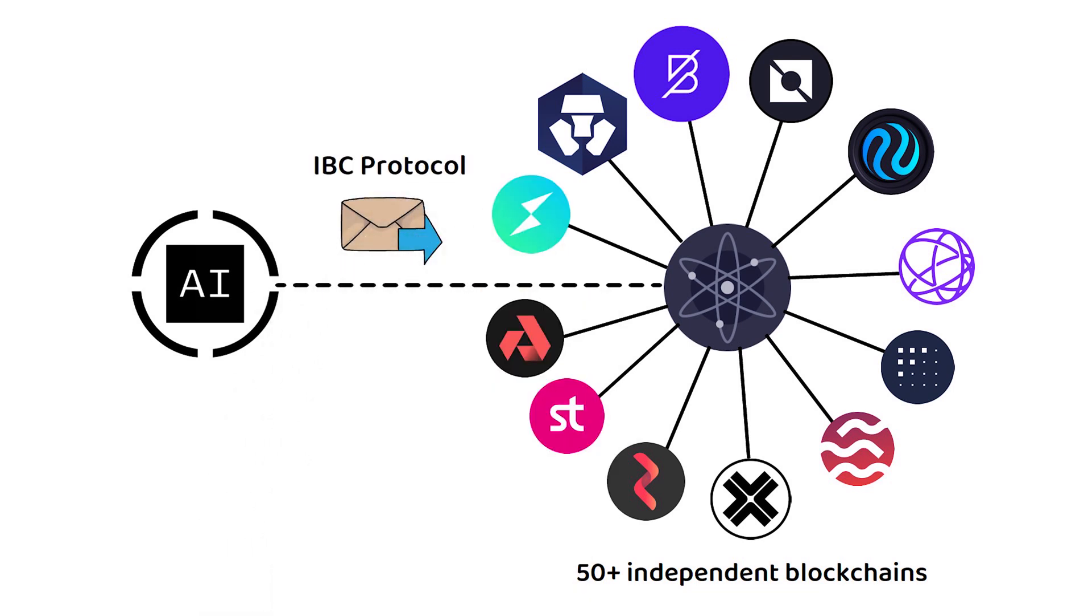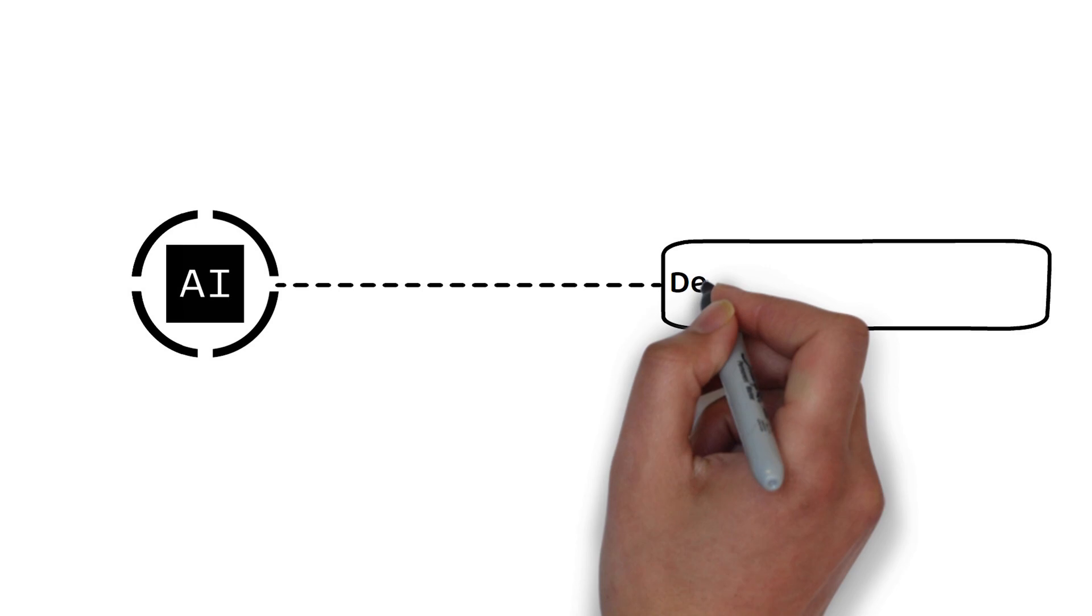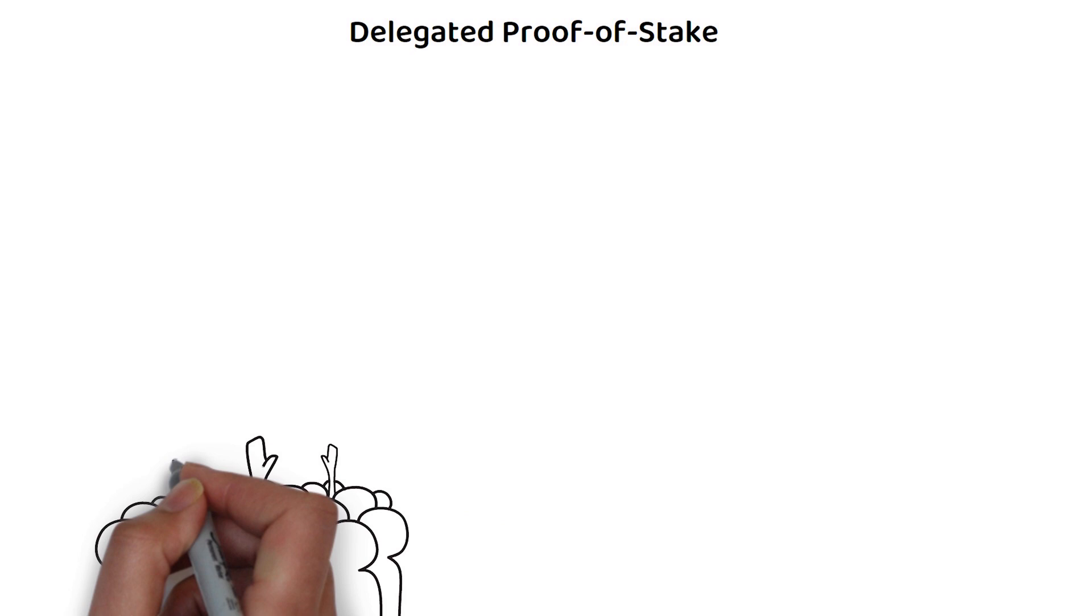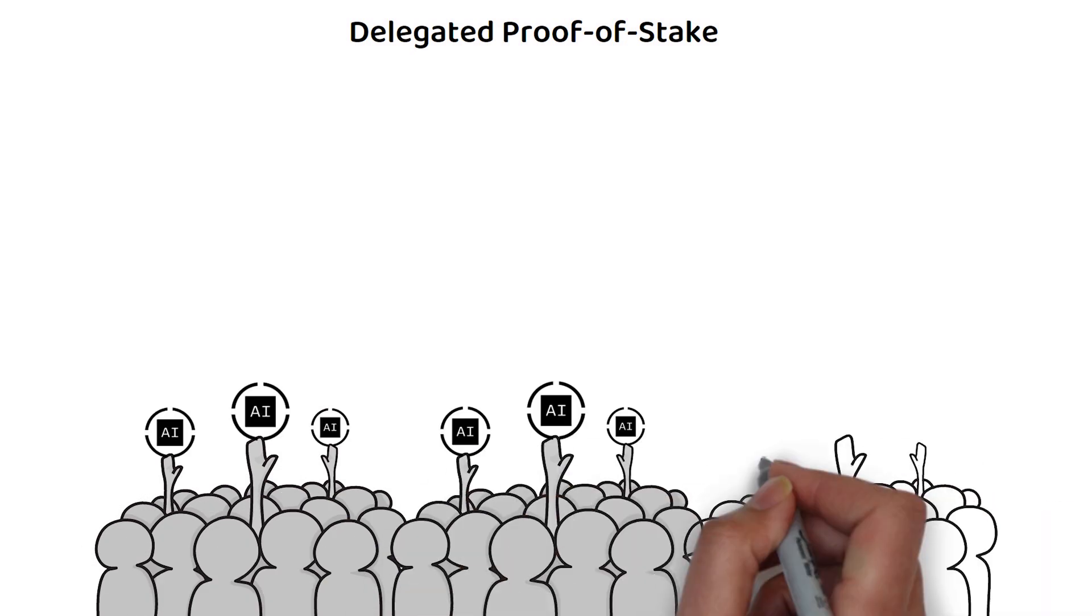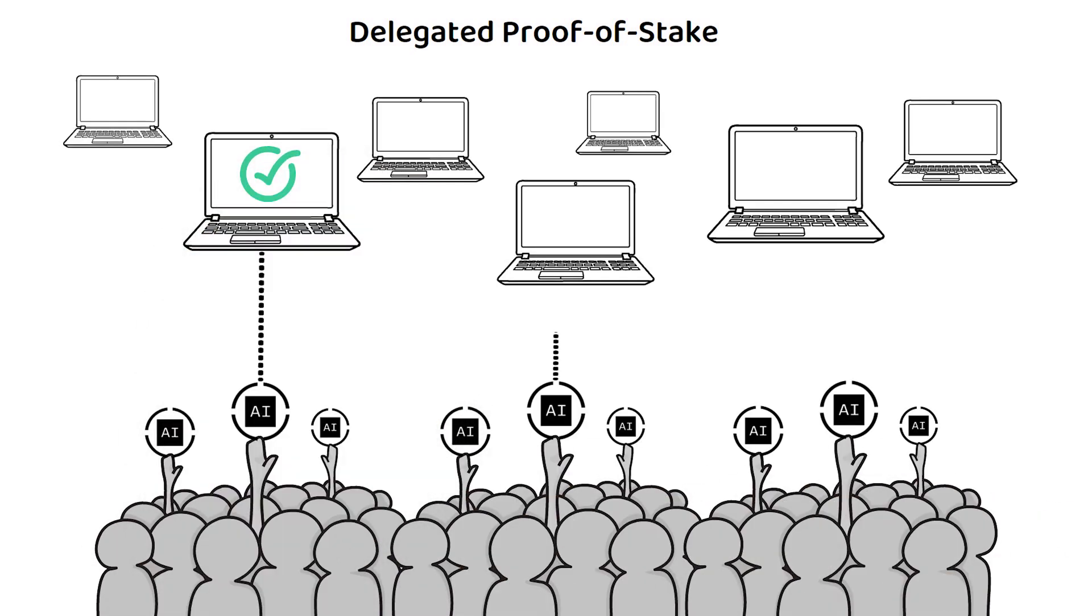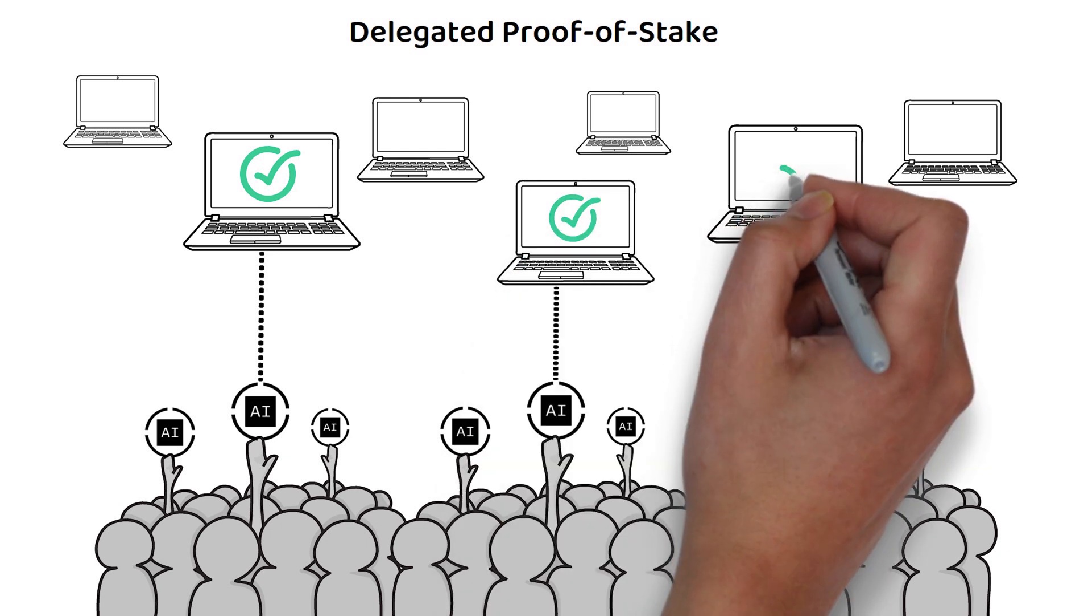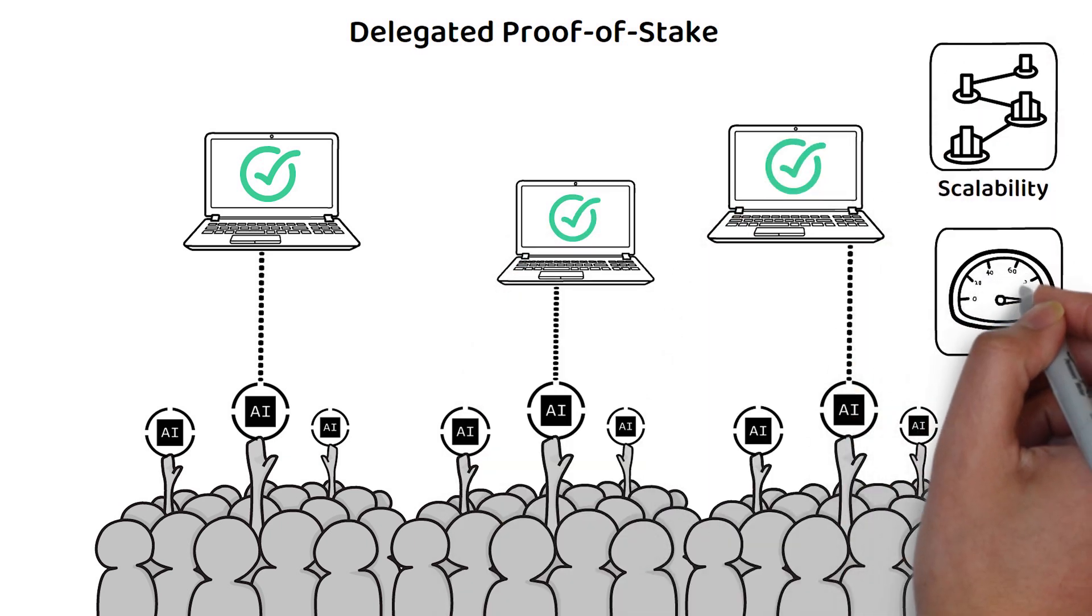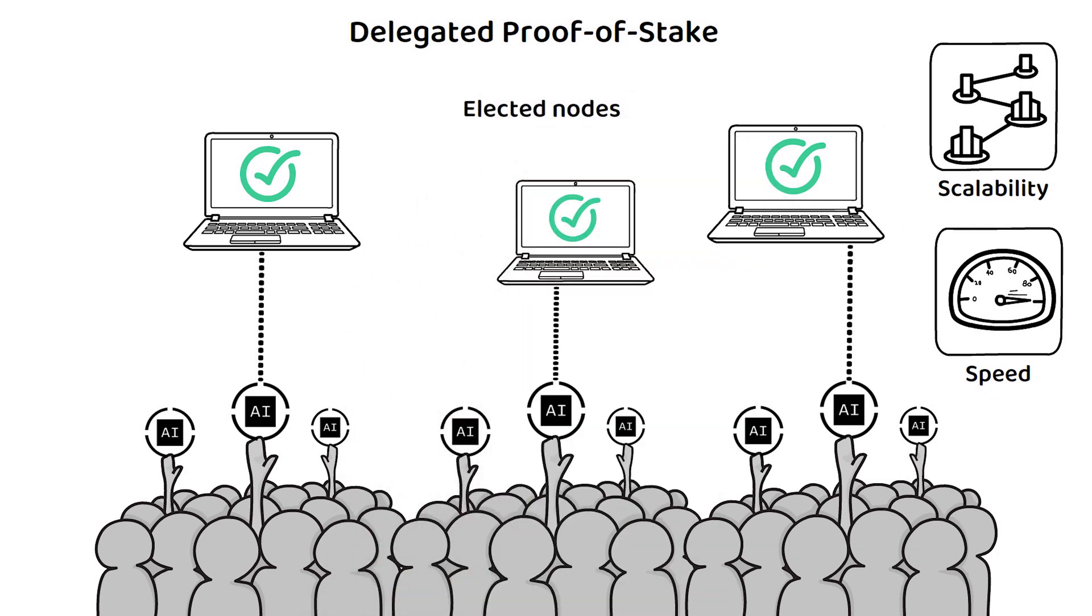Though, the one thing it does differently is through its delegated proof-of-stake consensus mechanism. Under delegated proof-of-stake, token holders select a limited number of delegates to validate transactions and secure the network, enhancing the scalability and transaction speed of the network by moving decision-making authority to fewer elected nodes.